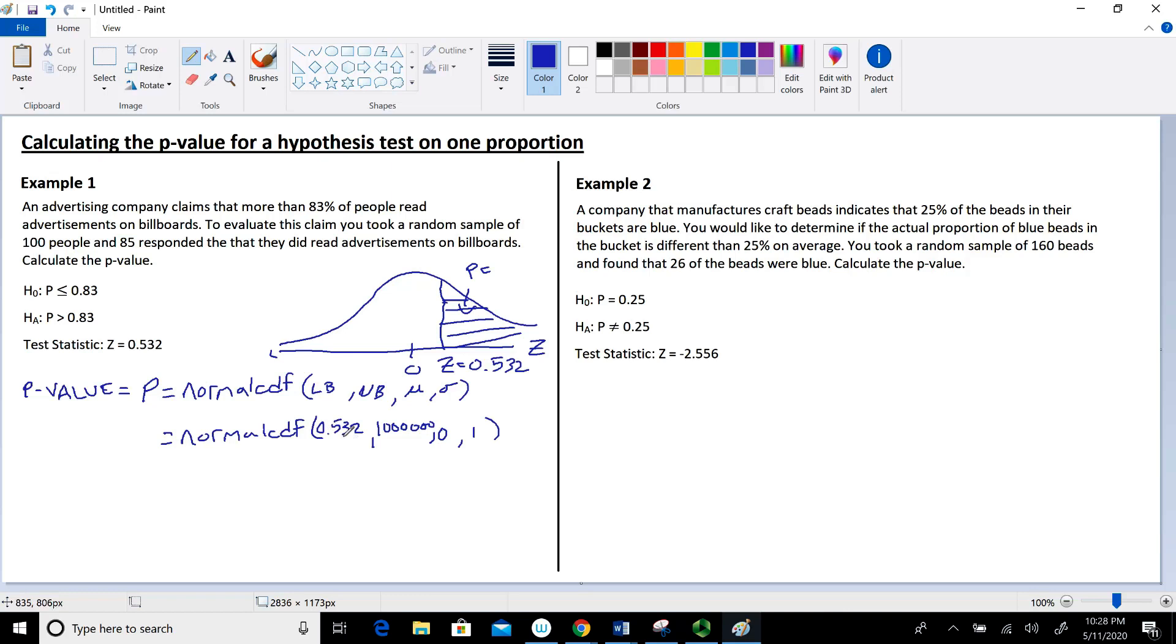On your TI-83 or TI-84 graphing calculator, hit the second button and the VARS button to open the distribution menu where you'll find the normal CDF function. When you plug these values in and work it out, you'll get a p-value equal to 0.2972.